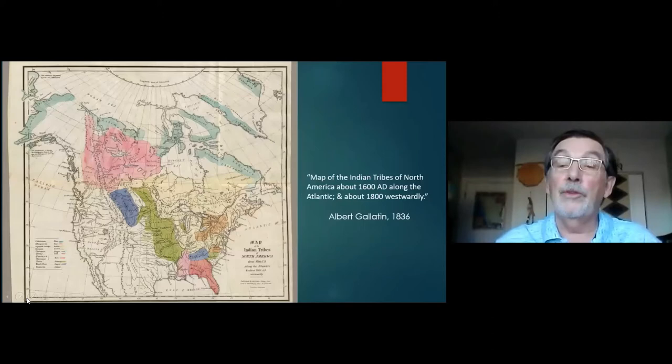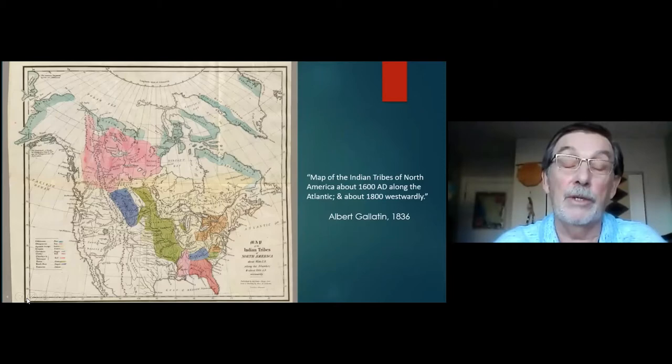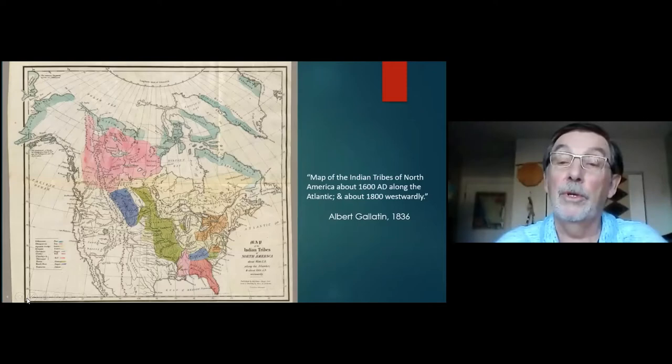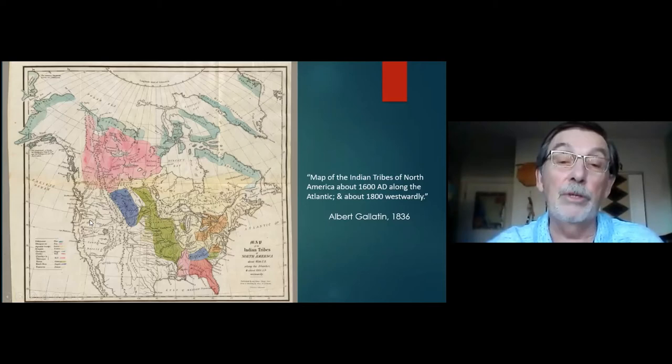This map by Albert Gallatin — he was an ethnologist in the United States, also the Secretary Treasurer of the United States at one time — in 1836 produced this map of the whole of North America, a map of the Indian tribes of North America, about 1600 AD along the Atlantic and about 1800 moving west. From the information that he had at the time, he tried to compile and create this map showing various American Indian groups and also Canadian Indigenous groups.